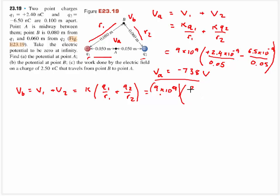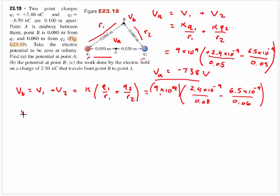Charge 1 is still 2.4 times 10 to the negative 9th, and R1 is 0.08 meters. Charge 2 is negative, so we pull that out front: 6.5 times 10 to the negative 9th, and that distance is 0.06 meters. This gives a voltage at B equal to negative 705 volts.